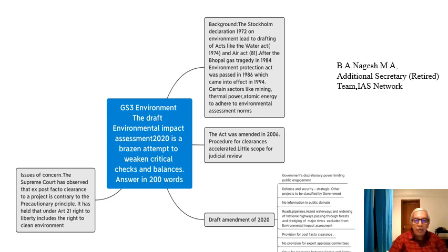As for other projects, they will be classified by the government — the government will decide which is strategic and which is non-strategic. There is no information in the public domain. This is another important feature of the Draft Amendment of 2020. The government wants to maintain a level of secrecy by not allowing the public to access the procedure of decision making.